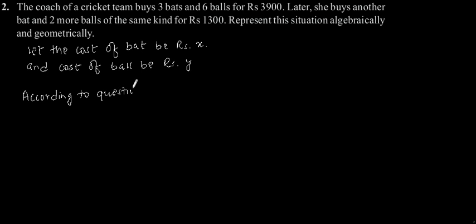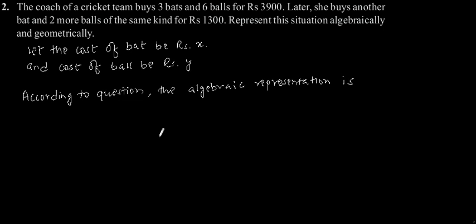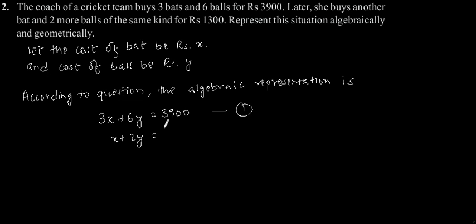According to the question, the algebraic representation is: 3x + 6y = 3900. Let's say this is our Equation 1. And x + 2y = 1300. Let's say this is our Equation 2. So this is our required algebraic representation.